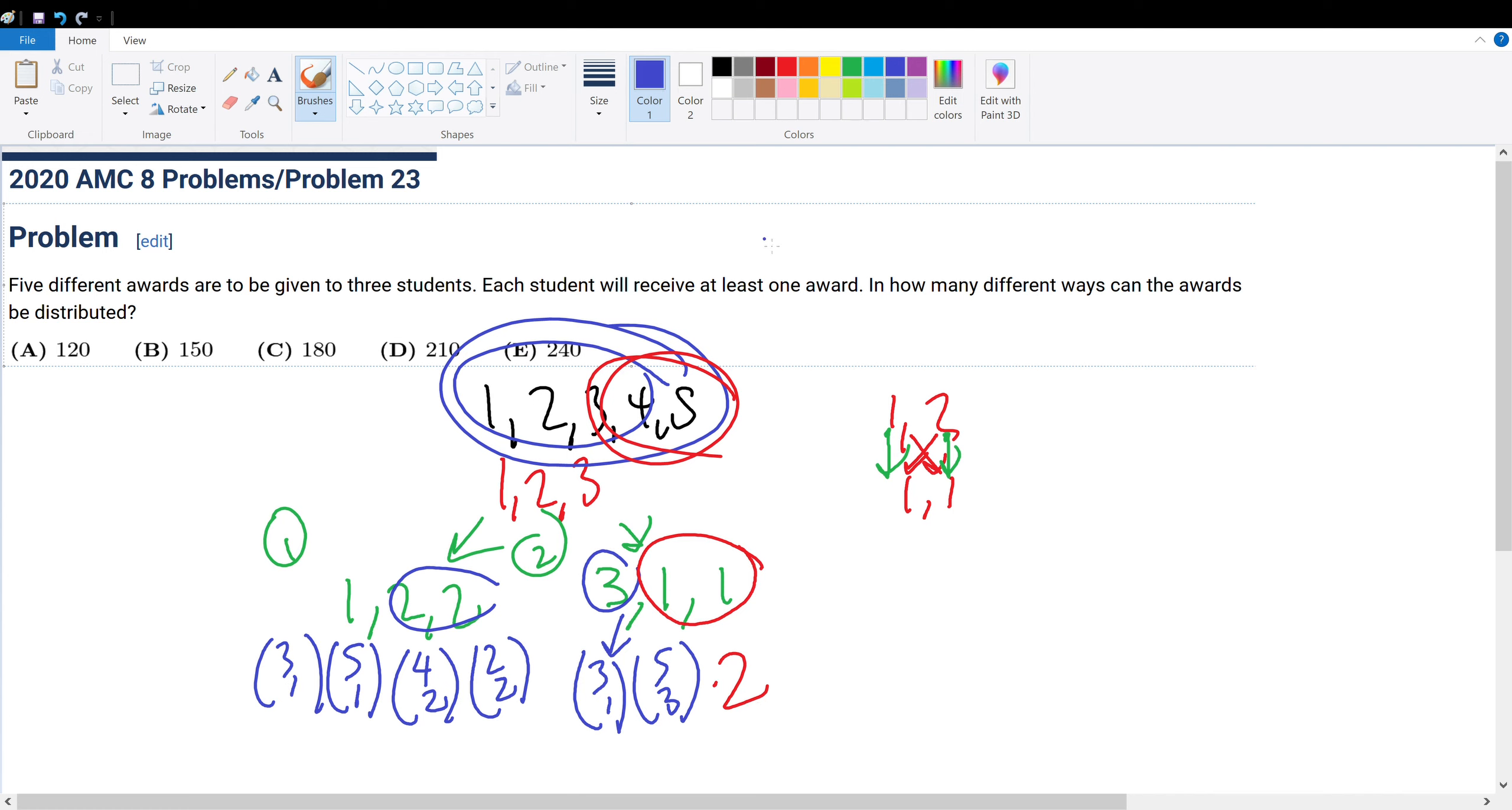So it's three times five. Four choose two is four factorial over two factorial times four minus two factorial, which is four times three over two factorial. So that is six times two choose two is just one. So this is 15 times six. 15 times six, that is 90.